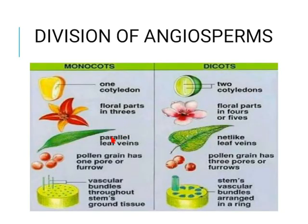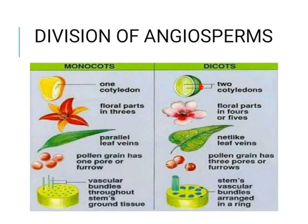Angiosperms are further divided into monocotyledons and dicotyledons. In monocots, 'mono' means one — they have one cotyledon, which is the seed leaf. Dicots have two cotyledons. Examples of dicotyledons include gram and beans. Monocotyledons include rice and corn. In monocotyledons, floral parts are arranged in threes, whereas in dicots they are arranged in fours or fives.